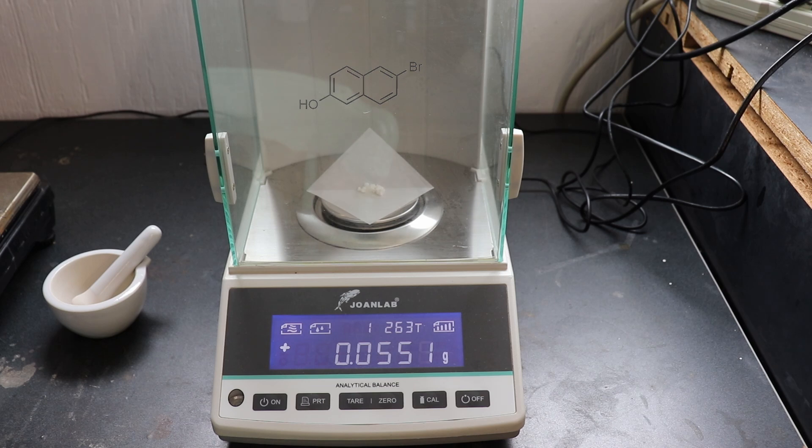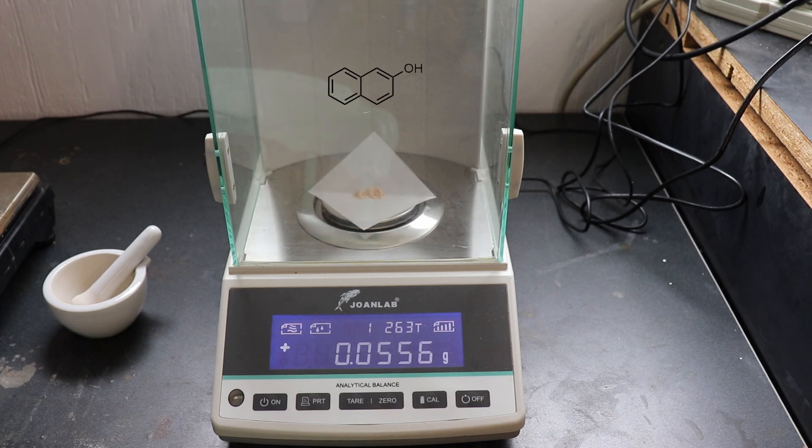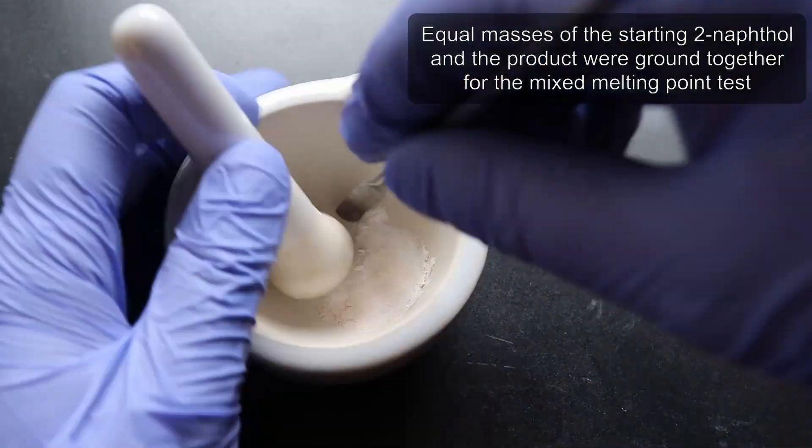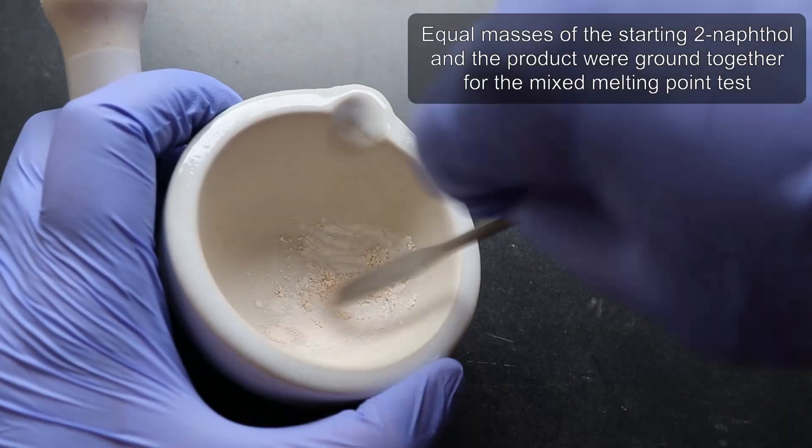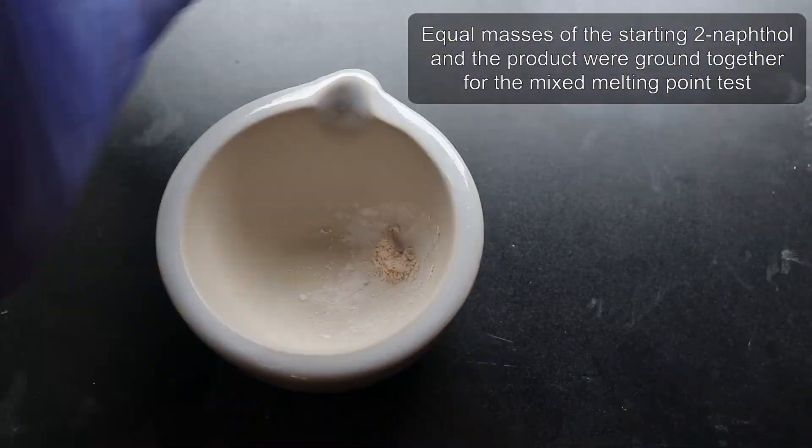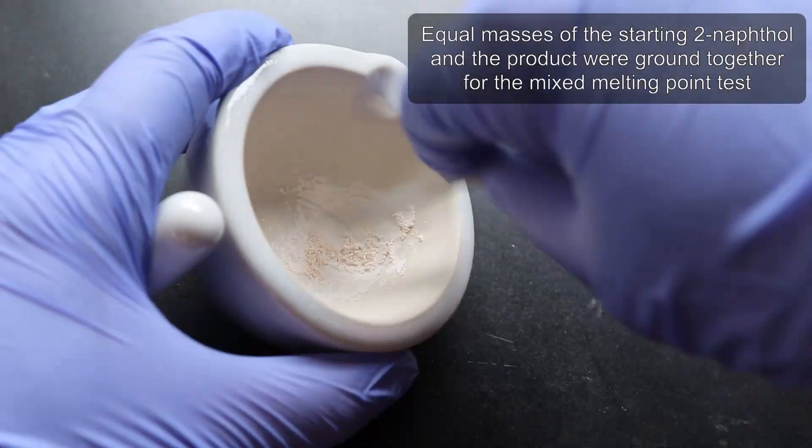So I decided to do one last test to differentiate between 2-naphthol and 6-bromo-2-naphthol: a mixed melting point. I combined equal masses of 2-naphthol and 6-bromo-2-naphthol and finely ground them together.